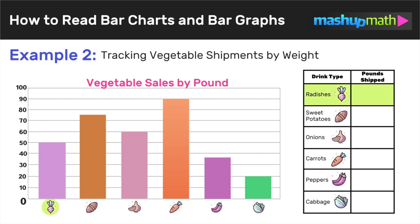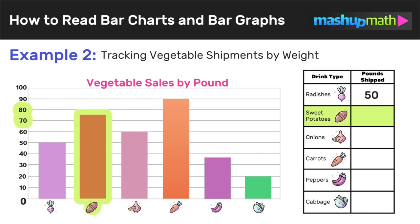We're ready to fill in our table. Starting with radishes, the bar goes all the way up to 50, so we conclude that 50 pounds of radishes were shipped. Next, for sweet potatoes, the bar stops at the midpoint between 70 and 80, so we conclude that 75 pounds of sweet potatoes were shipped.